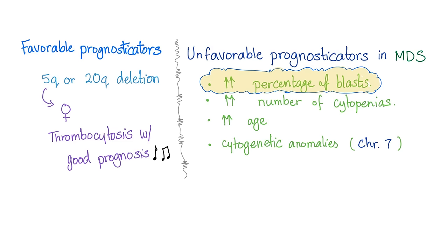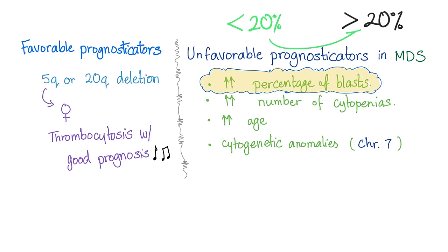Now I have MDS — is it really bad? This is the question of prognosticators. Favorable prognostic factors are the 5q deletion and 20q deletion. The 5q deletion is more common in females; you'll have a female with thrombocytosis and good prognosis. Unfavorable prognosticators include increased percentage of blasts. Acute leukemia by definition has blasts greater than 20%. In MDS, you have blasts but they are less than 20%. If blasts increase, you are going in the direction of acute leukemia — and that is bad.